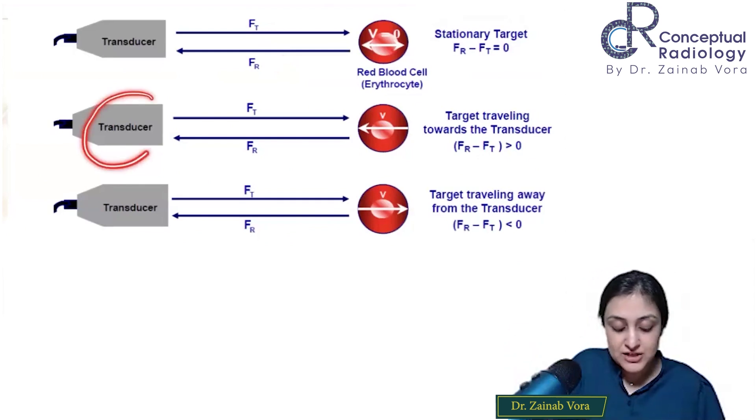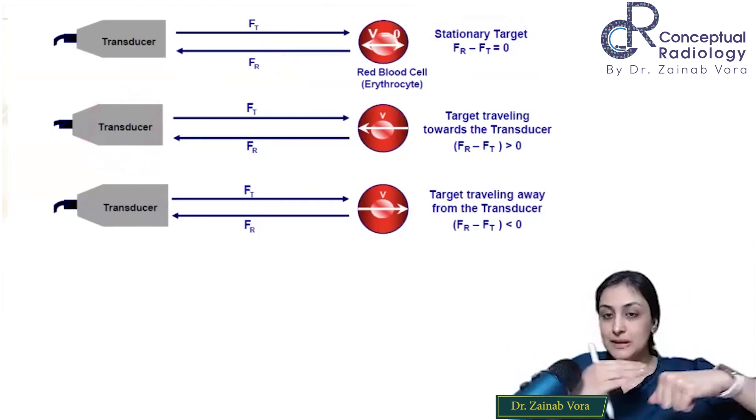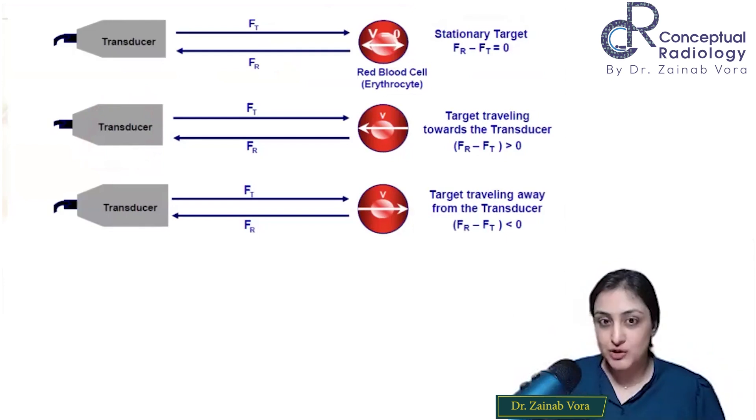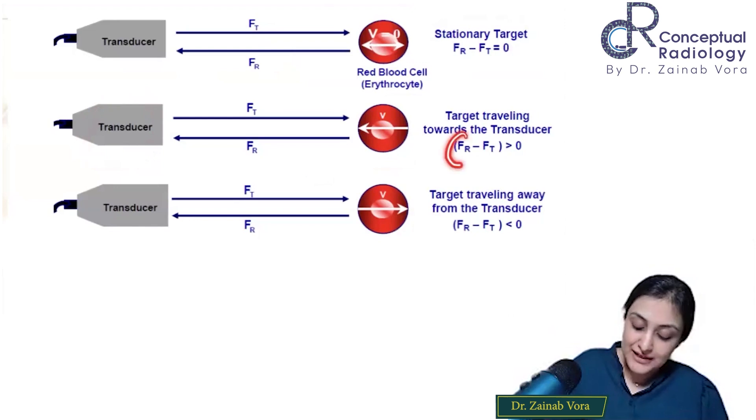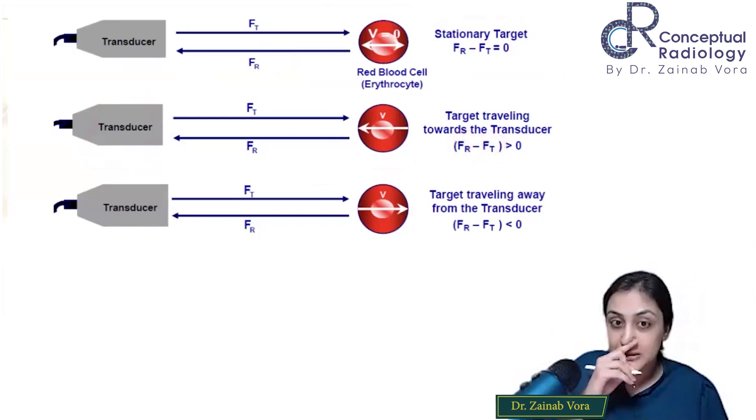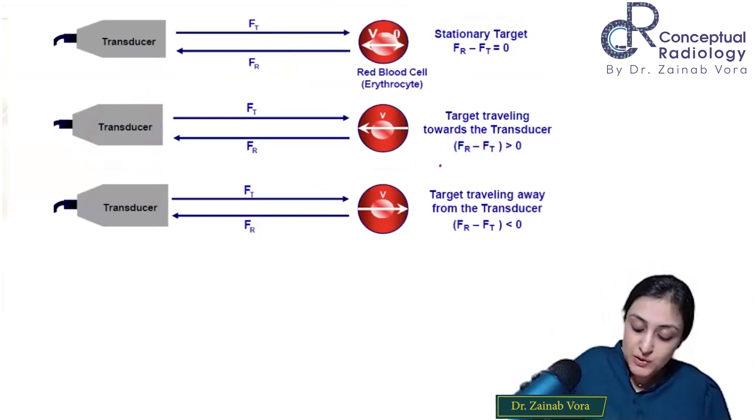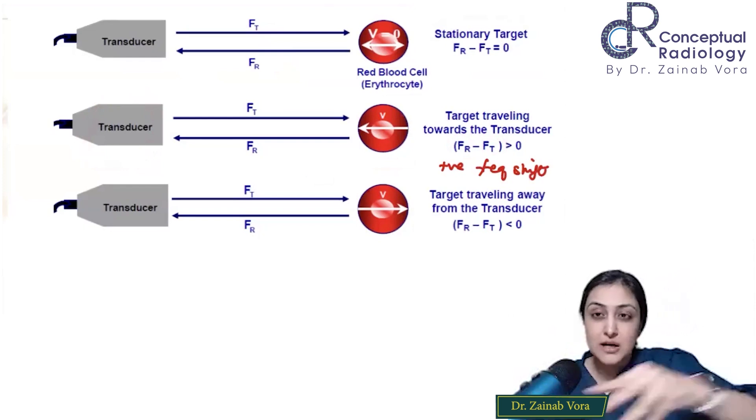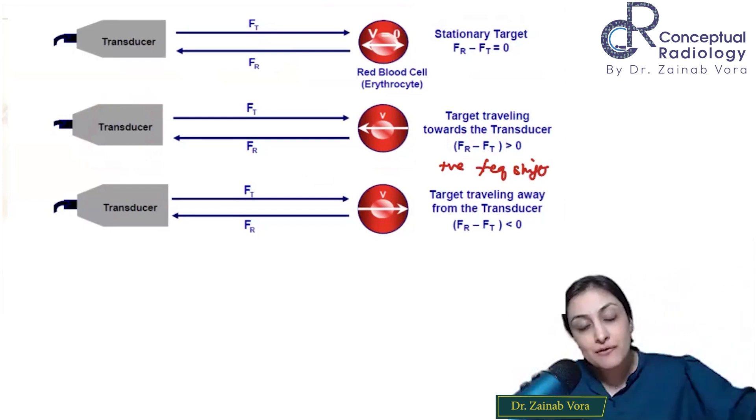When there's a stationary target, the transmitted frequency and received frequency remain the same. Now the stationary object is the transducer I'm keeping, and the RBCs are the ambulance. When RBCs are moving towards me, the frequency I'm receiving is more than the transmitted frequency. This is a positive frequency shift.